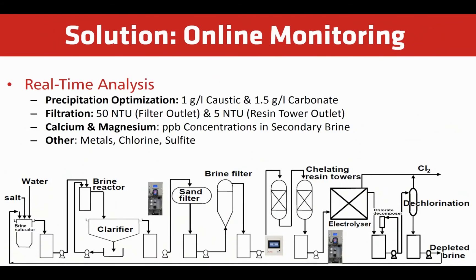Galvanic recommends using online analyzers that can handle difficult brine conditions. Caustic and carbonate can be monitored in the primary purification stage to optimize hardness removal. Turbidity or suspended solids can be monitored at the filter and resin tower outlets to optimize filtration. Total hardness can be monitored in the secondary brine before electrolysis to protect the membrane cell.